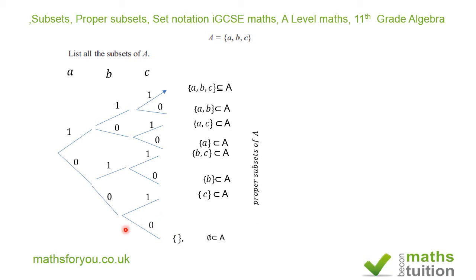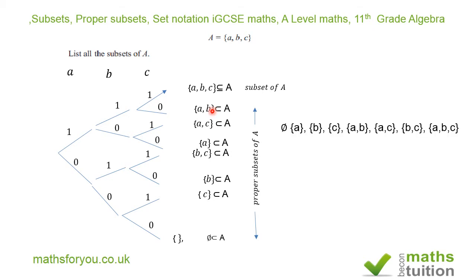So what you've now got is proper subsets — all the ones with the less-than sign are the proper subsets. They're all subsets, but there are seven proper subsets. Your answer should be: the empty set, subset {A}, subset {B}, subset {C}, subset {A,B}, subset {A,C}, subset {B,C}, and subset {A,B,C}.